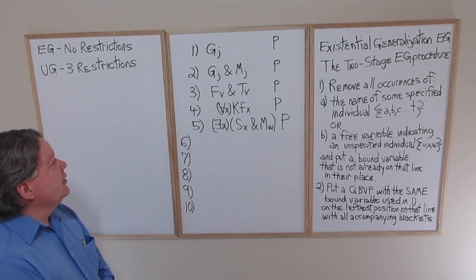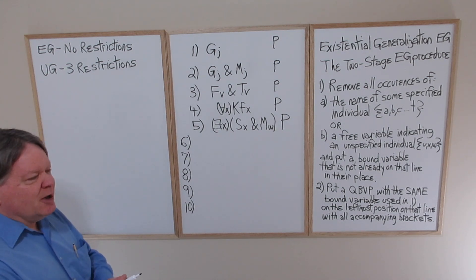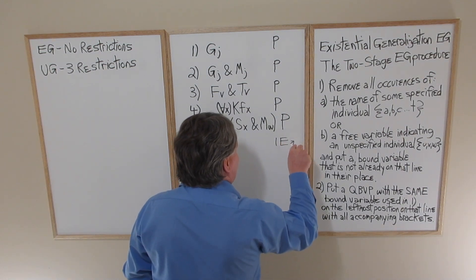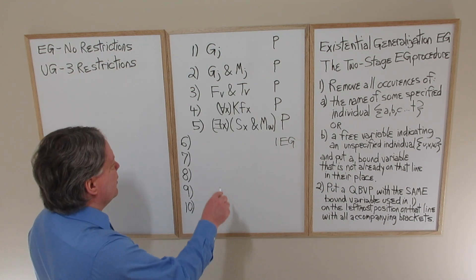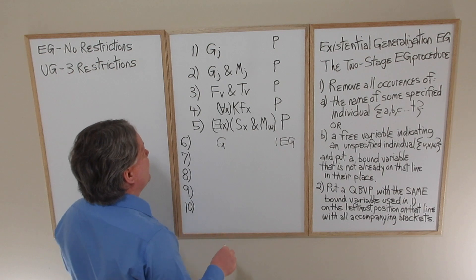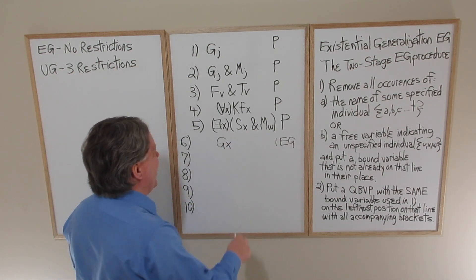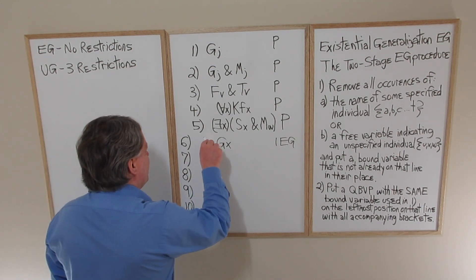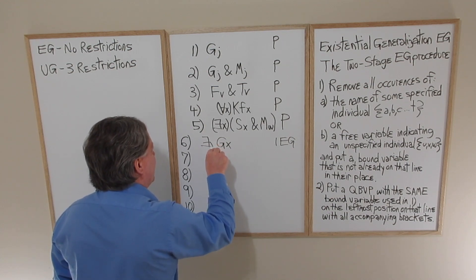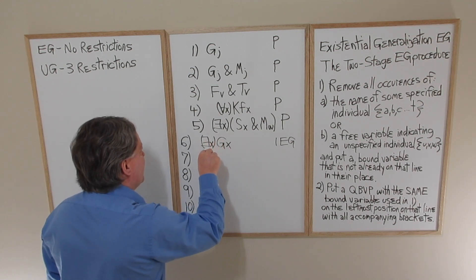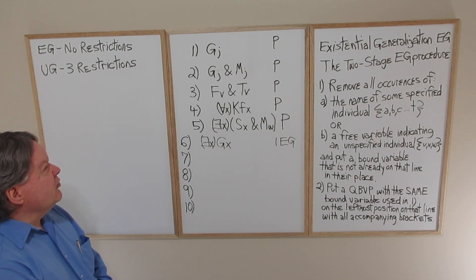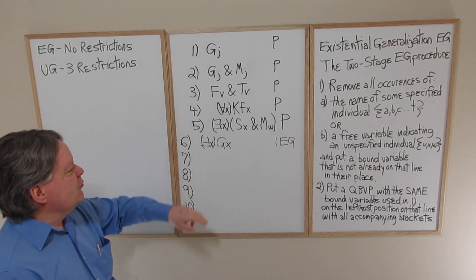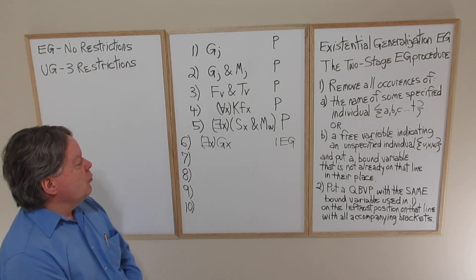Simplest case: 'Jack was born in Germany.' If Jack was born in Germany, at least one person was born in Germany. We do one EG on line one: remove Jack's name, put a bound variable X (new to the line), then add the existential quantifier with the matching bound variable and optional decorative brackets. Jack was born in Germany — by EG we infer there exists at least one X, namely Jack, who was born in Germany. That's obviously a valid inference.